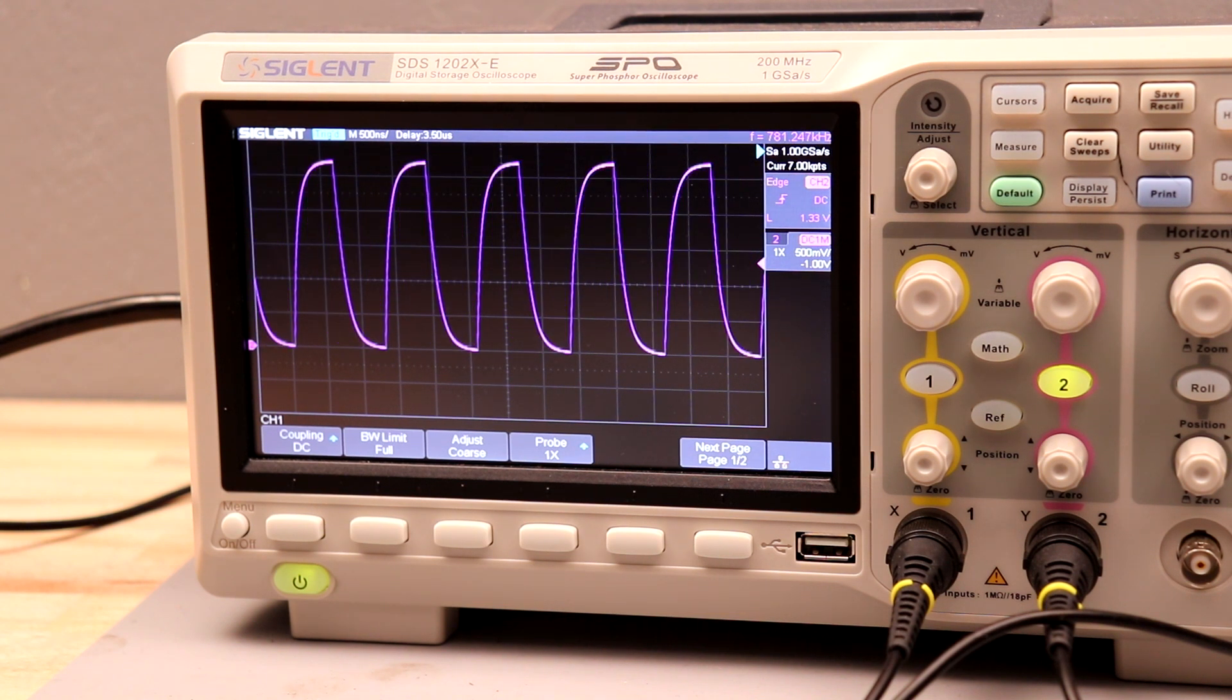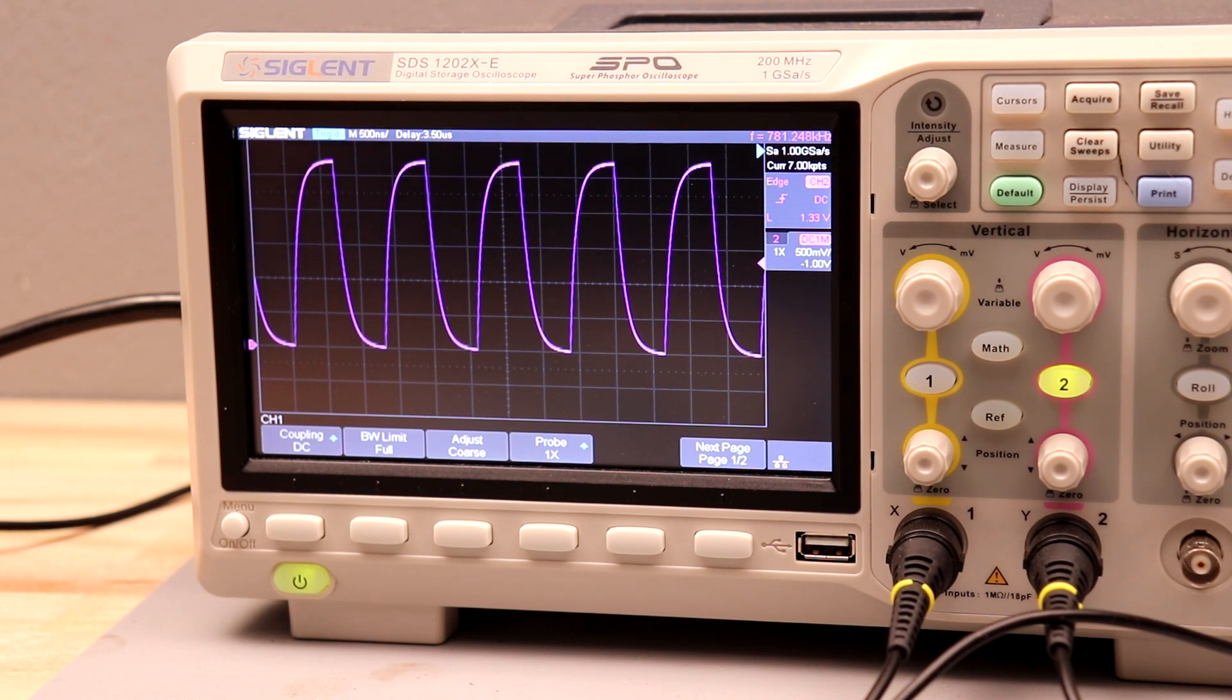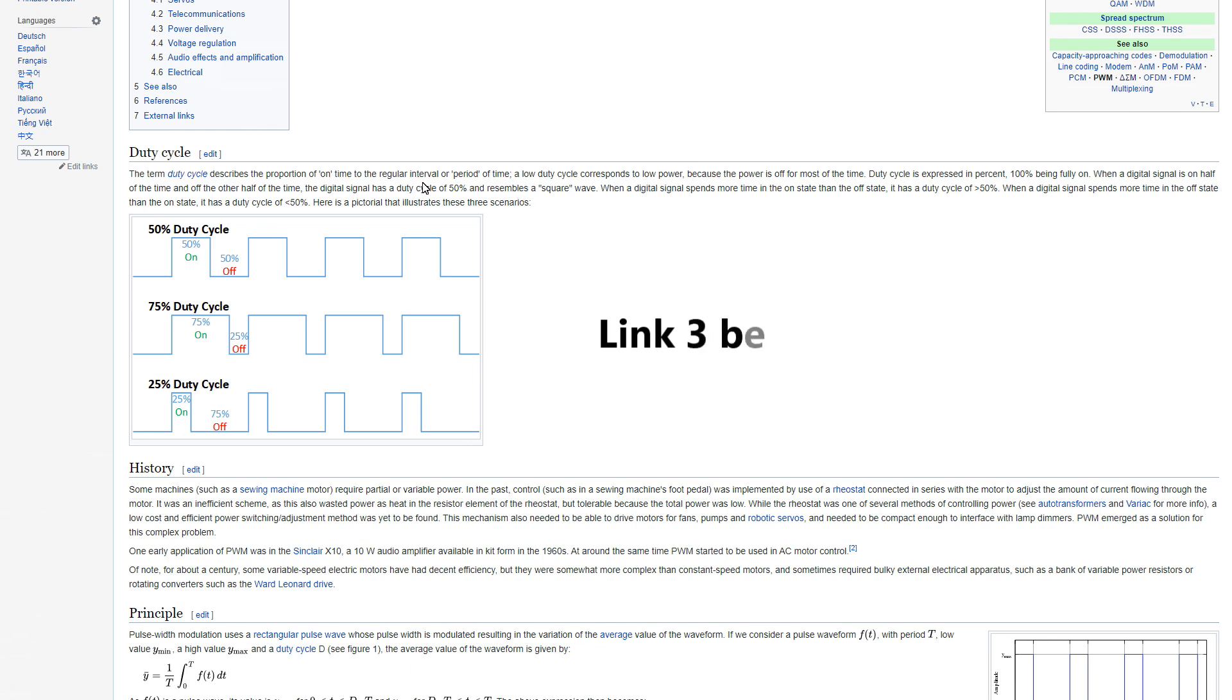I won't go super in depth describing PWM. There's lots of good videos out there if you want a full understanding. Here's just a quick overview of what it's doing. What it does is switch on at a set rate and then it varies the amount of time it stays on.